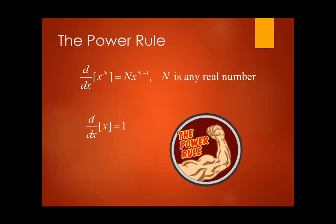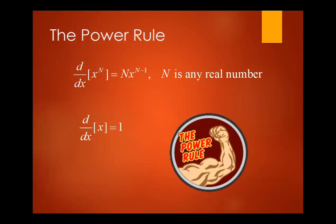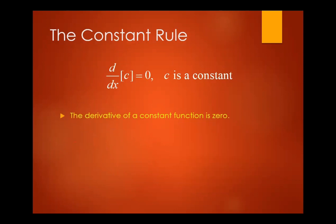Power rule: the derivative of X to the power N has the formula N times X raised to the power N minus 1, where N is any real number. The derivative of the variable X is always 1. For the constant rule, the derivative of a constant is always 0.